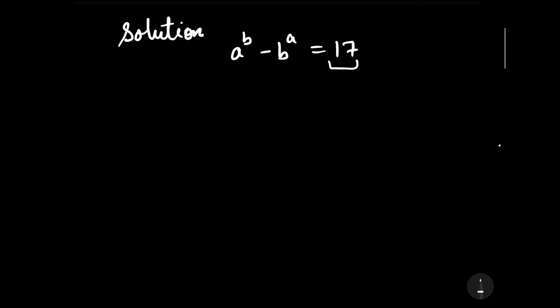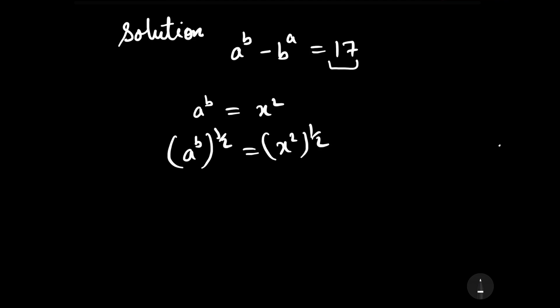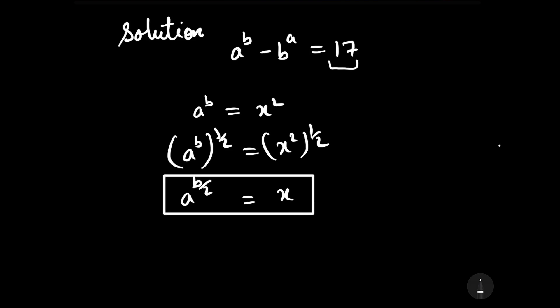Let us consider a to the power b as x squared. Then we can write a to the power b to the power 1 by 2. Therefore, a to the power b by 2 is equal to x. It means the value of x is equal to a to the power b by 2, and the value of a to the power b is x squared.